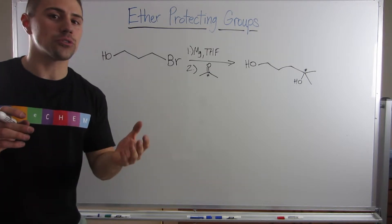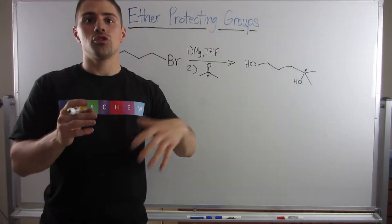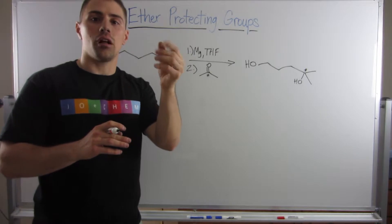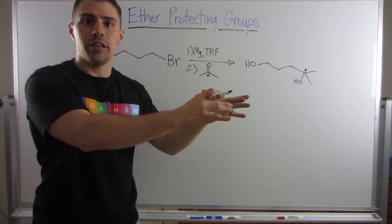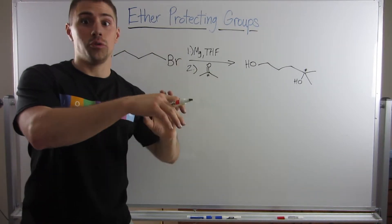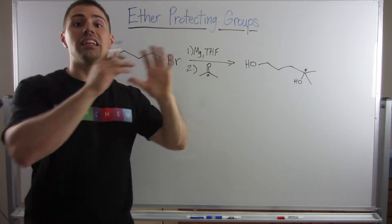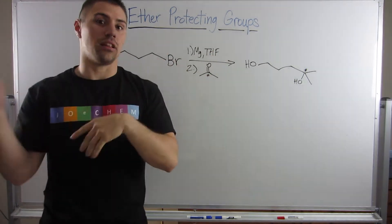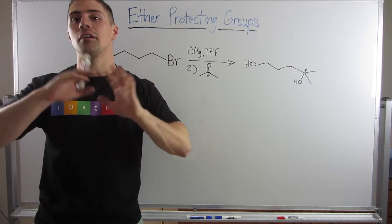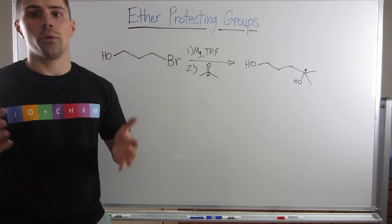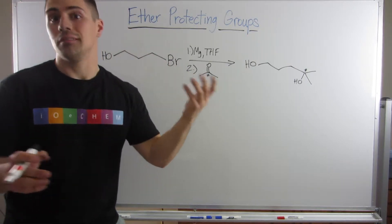By protecting groups, I mean using ethers to disguise part of your molecule to do some chemistry, and then undisguise your molecule. You'd make an ether to do something and then take the ether off. It always makes more sense when we look at something concrete, like an example.